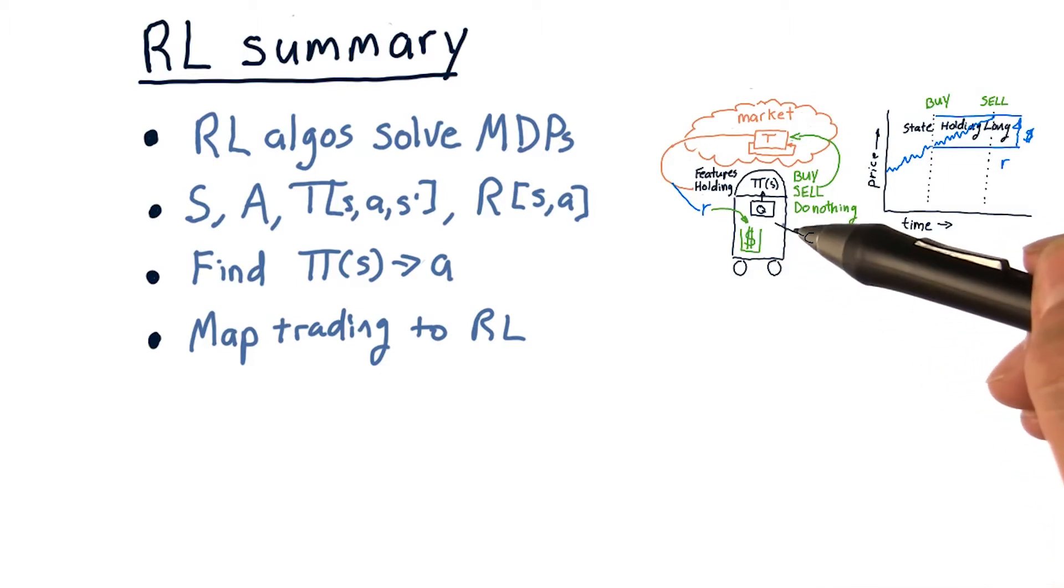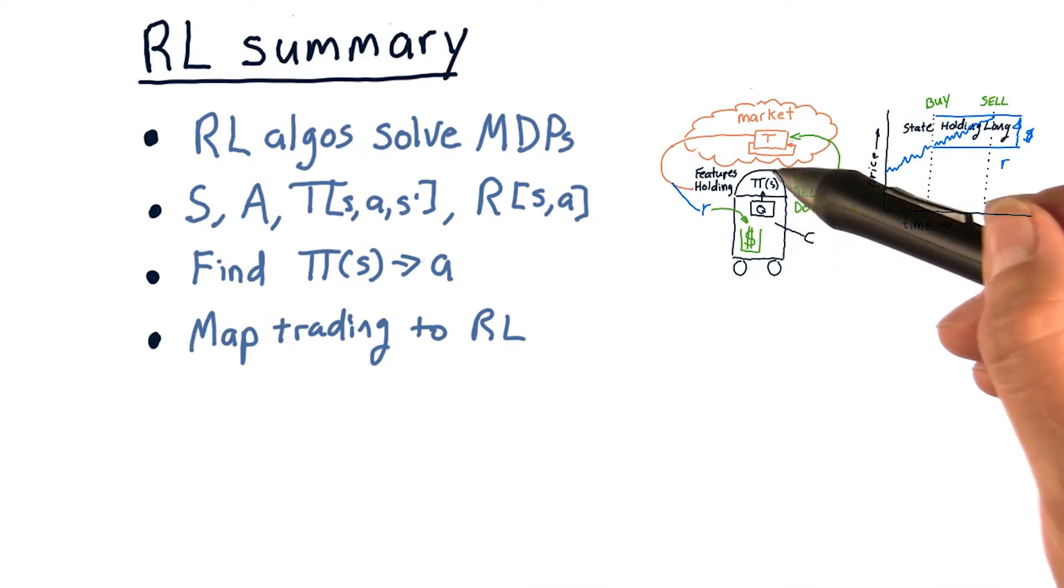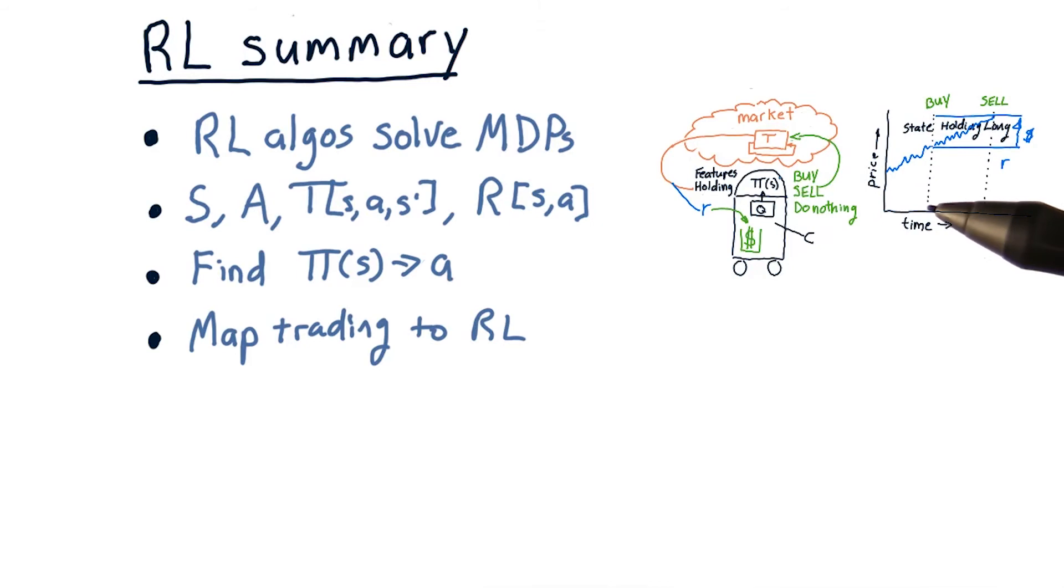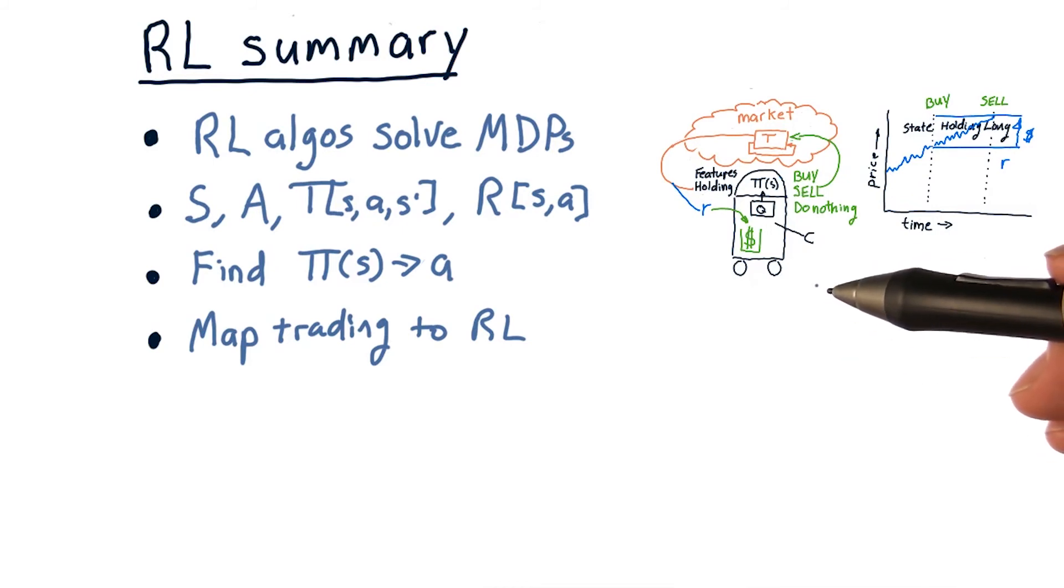We can apply reinforcement learning algorithms to find this policy. We've mentioned a few of those algorithms, for instance, policy iteration and value iteration and Q learning. But we haven't talked in detail about what they are, and that's the subject of lessons coming up.